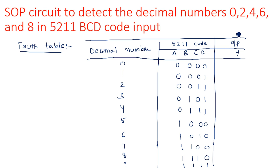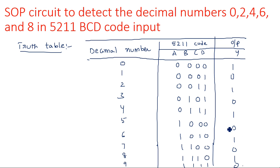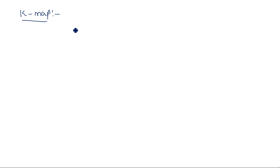The output Y is 1 at positions 0, 2, 4, 6, and 8 — that means all even numbers produce output 1 and all odd numbers produce output 0. Now we need to draw the K-map to get the simplified expression for the output Y.